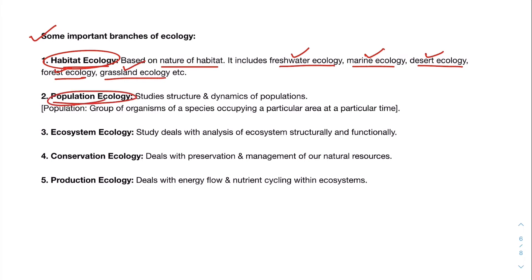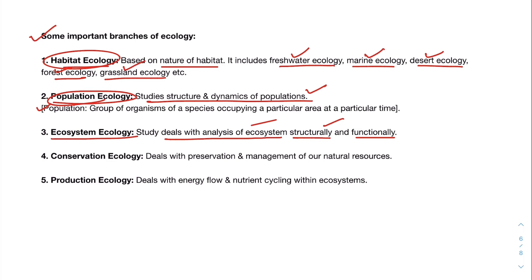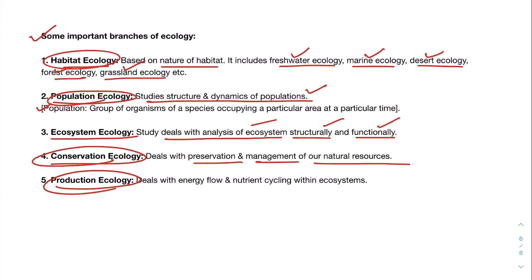Population ecology studies the structure and dynamics of populations. Ecosystem ecology deals with analysis of ecosystems structurally and functionally. Conservation ecology deals with preservation and management of our natural resources. Production ecology deals with energy flow and nutrient cycling within ecosystems.